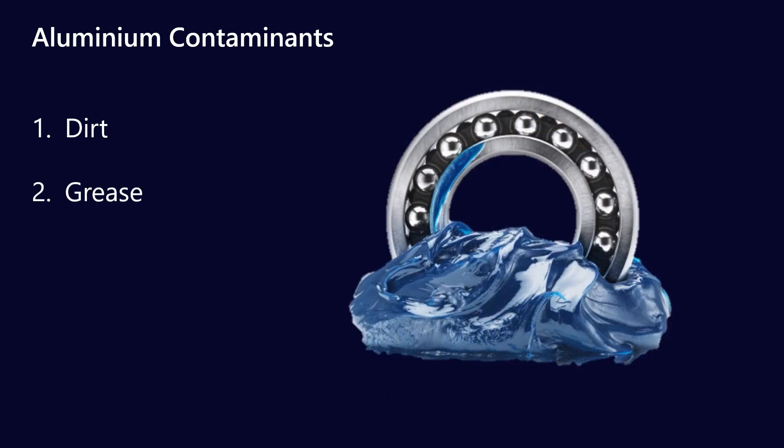The other contaminant source is grease. Aluminium complexes are a reasonably common type of grease — they tend to be quite water resistant, so both simple aluminium and complex aluminium greases are out there in the market, although they're not anywhere near as popular as lithium or calcium sulfonate. Aluminium complex greases could be a source of contamination, and if they get into your used oil analysis sample they will show up in the results.